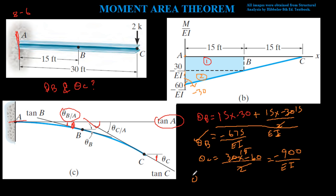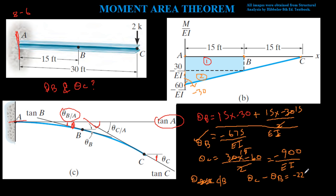If we were asked to find theta C/B — the angle between points C and B — we can either take the area of that region (15 times 30 over 2), or simply compute theta C minus theta B, which gives minus 900 minus (minus 675) equals minus 225 over EI.